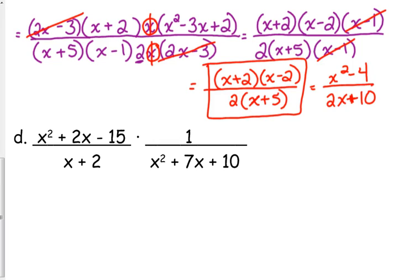One more. Not quite as big as the last one, a little bit smaller. x squared plus 2x minus 15 over x plus 2 times 1 over x squared plus 7x plus 10.